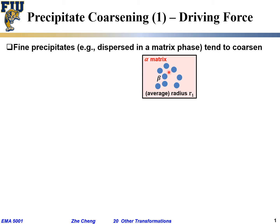As an illustration: we have an alpha matrix phase, and beta is our precipitate coming out from the matrix phase due to the solubility change. Initially the precipitates have an average radius r1, which is quite fine. Because these precipitates are closely spaced, dislocations cannot move very far, which means the material appears to be stronger.